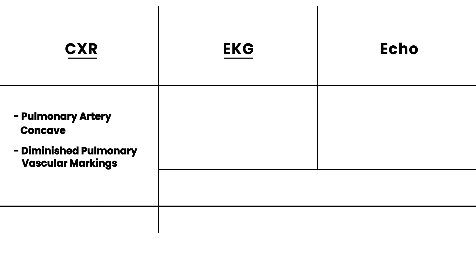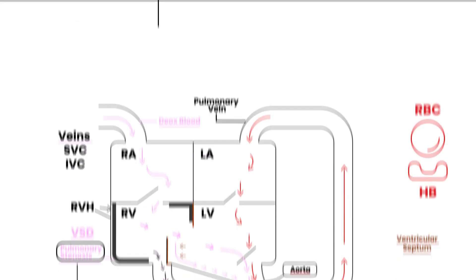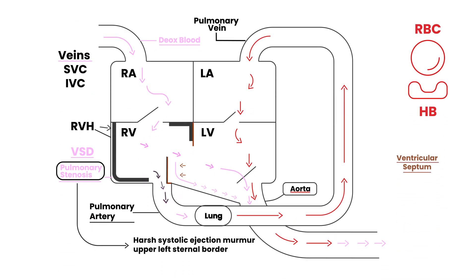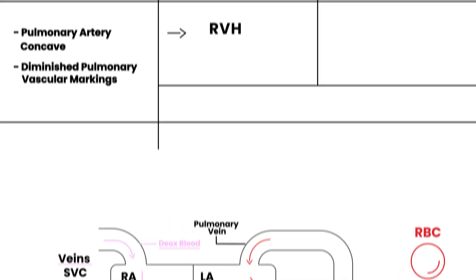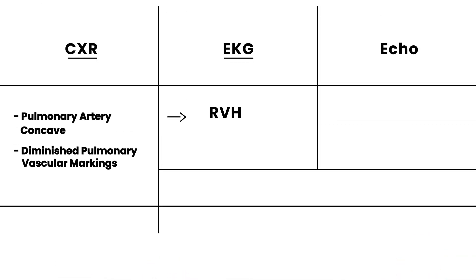The EKG is very important because you can actually pick up right ventricular hypertrophy on it. The echocardiogram is the gold standard — that will essentially show you the full Tetralogy of Fallot. But before the echocardiogram, the chest X-ray and EKG can also be helpful.